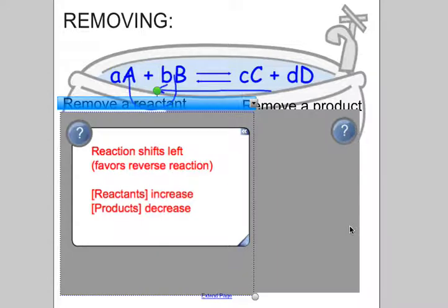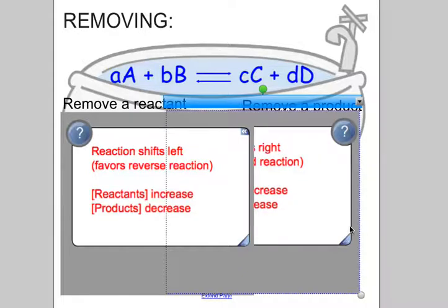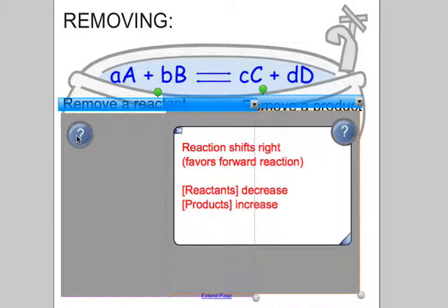You might think — well, I just removed reactants. But when the reaction starts going in the reverse direction, you're going to end up making more of them to reestablish that balance. And what if I scooped out from the product side of my bathtub? If I remove product, my reaction will shift to the right, favor the forward reaction, increasing my amount of products and decreasing my amount of reactants.